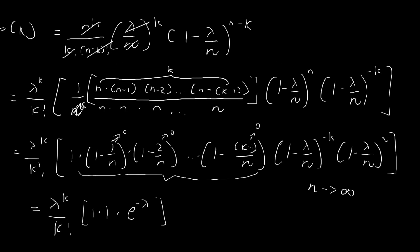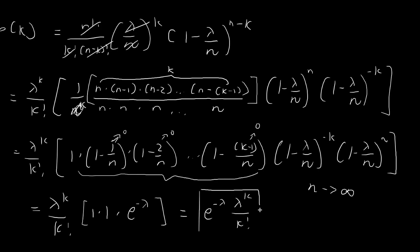In the end, once n tends towards infinity, with a bit of cleaning up we have e to the power of negative lambda times lambda to the power of k divided by k factorial. This is the probability mass function of the Poisson distribution.